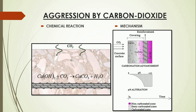However, when carbon dioxide penetrates into the concrete, this passive film is deteriorated due to the formation of acidic calcium carbonate. Hence the steel bars are exposed to corrosion, and the deterioration of the concrete structure takes place.